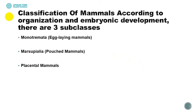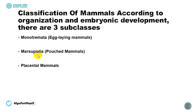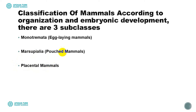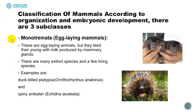According to the way they develop their embryos, we can divide mammals into three subclasses or three groups. First are mammals that can lay eggs, called Monotremata. The second category is pouched mammals — mammals with a pouch-like structure on their abdomen — called Marsupialia. And last, we have placental mammals, which develop a placenta structure inside their abdomen.